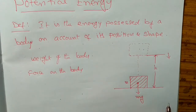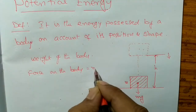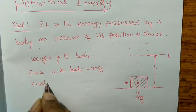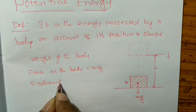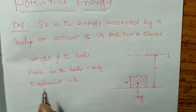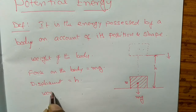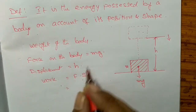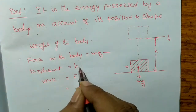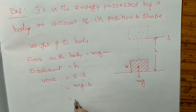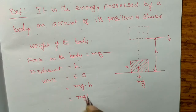The force on the body is equal to the weight of the body, which is equal to mg. The displacement is equal to h. Then the work done is equal to F dot s, so F equals mg and displacement equals h, giving mg dot h.